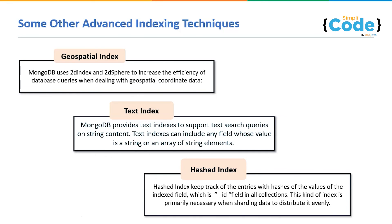That brings us to the end of today's session. In this way, you can use advanced indexing to create an index on multi-key compound fields as well. If you have a document with an array field, you can just create indexing for that array field — creating an index on an array creates separate index entries for each of its elements. I hope you understood all the techniques and how we implement advanced indexing in MongoDB. If you found this tutorial informative and helpful, give it a thumbs up. For any queries, feel free to comment below, and check out our dedicated MongoDB playlist on the channel.